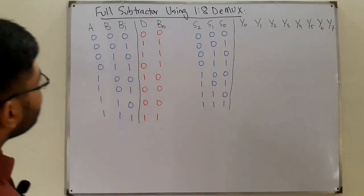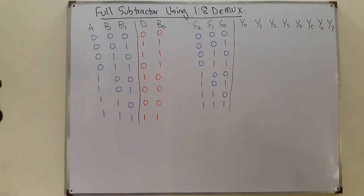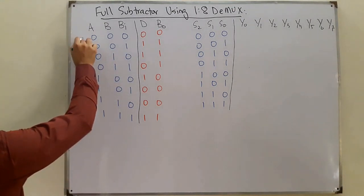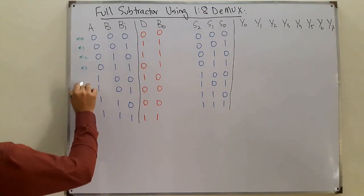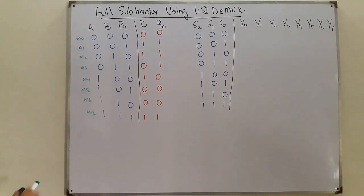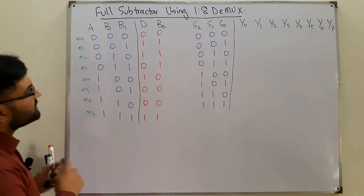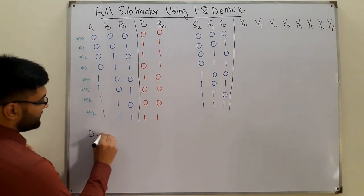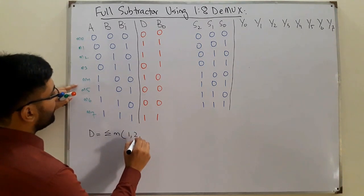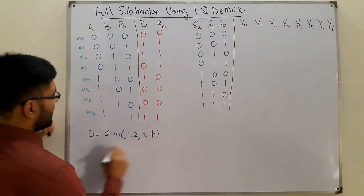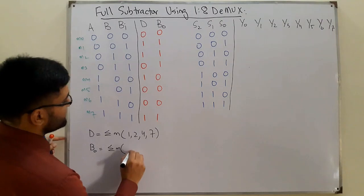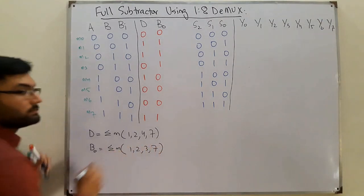So this is your full subtractor truth table. We identify the minterms — M0 through M7. For the difference output, we have a summation of minterms 1, 2, 4, and 7. For the borrow output, we have minterms 1, 2, 3, and 7.